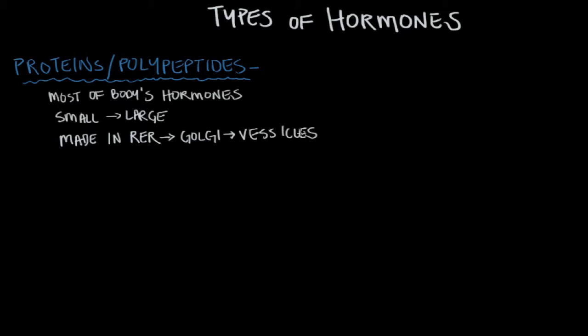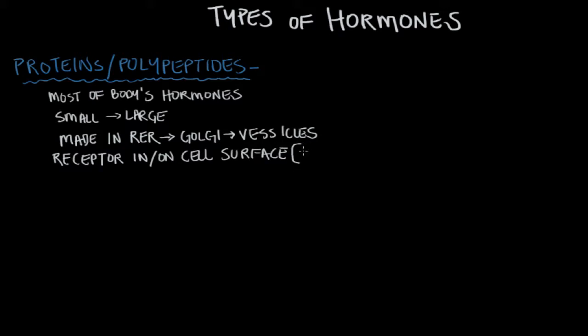Because proteins and polypeptides are made of amino acids, they're typically charged, which makes them water soluble — but it also makes it very hard for them to cross cell membranes. So typically their receptors are located in or on the cell surface. Since these hormones can't travel into the cell, they initiate a cascade effect using secondary messengers inside the cell. When they bind to the cell surface, they initiate a response inside the cell — we call this a secondary messenger system.